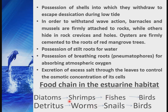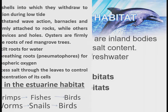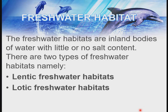For the food chain in the estuarine habitat: diatoms → shrimps → fishes → birds. There is also a detritus food chain where detritus serves as the producer, followed by primary consumer, secondary consumer, and tertiary consumer (birds). Let's look at the freshwater habitat — freshwater habitats are inland bodies of water with little or no salt content.